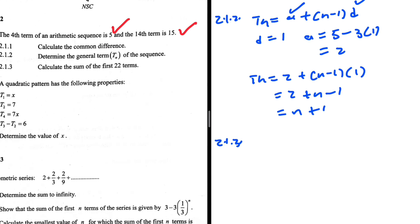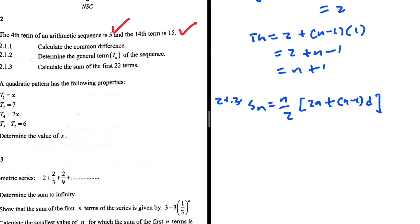2.1.3: Calculate the sum of the first 22 terms. So s22. Well, let's start by saying sn equals n over 2 multiplied by 2a plus (n minus 1) multiplied by d. I've memorized this formula but it is on the formula sheet. You don't have to really memorize it. So s22 will be equals to, the value of n we're looking for the sum of the first 22 terms.